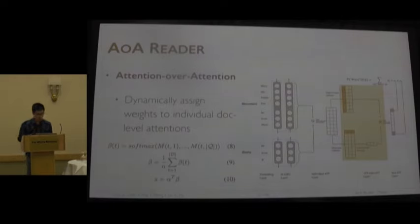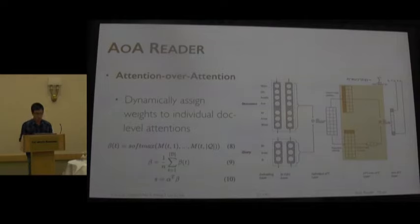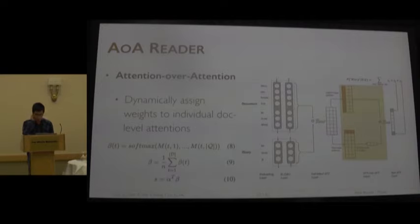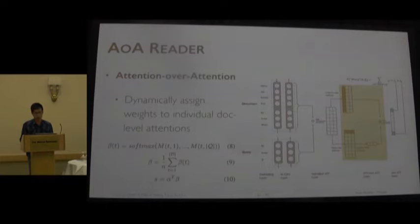This is the key component in our paper: the attention over attention mechanism. Unlike previous work, we dynamically weight the individual document-level attentions. First, we apply average pooling to summarize the pair-level attentions, indicating the overall importance of each query word. Then we compute a weighted sum of individual document-level attentions using these query word importance scores to get the final attention distribution. I will give a vivid example to demonstrate this mechanism.